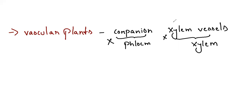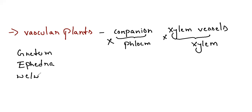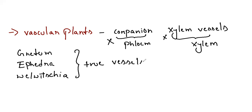Gymnosperms have both xylem and phloem. The vascular bundle in gymnosperms is conjoint, collateral, endarch, and open type — which allows secondary growth. Cambium is open, so secondary growth takes place in gymnosperms. Gymnosperms are woody plants; paper is prepared from gymnosperms. Most gymnosperms occur as trees, but there are also shrubs. Ephedra is a shrub.